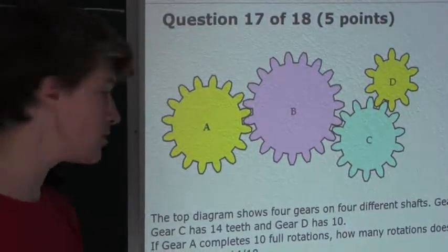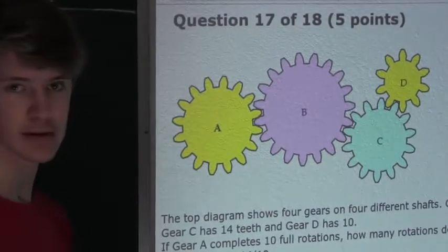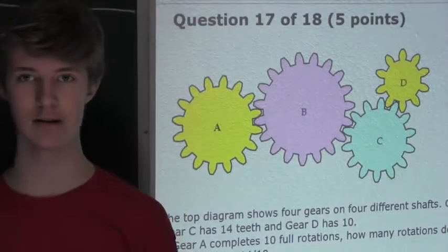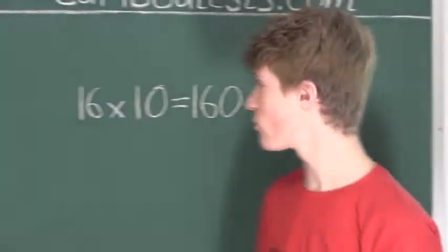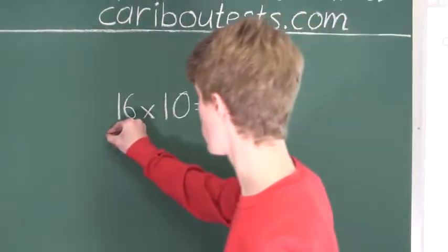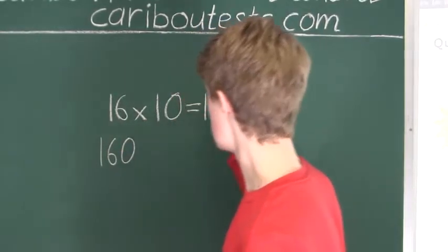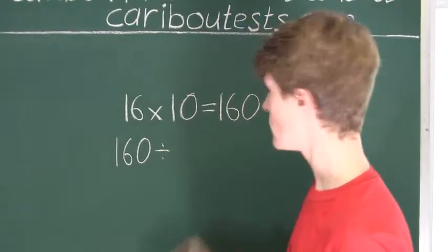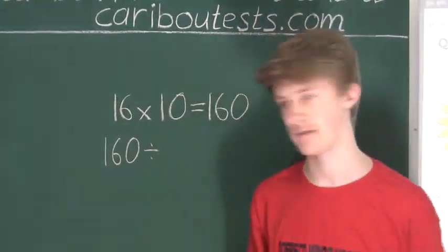And what we want to find out is how many rotations does gear D complete. So we know that gear D has 160 teeth that pass this point. Now to find out the number of full rotations, we take the 160 and divide this by the number of teeth that gear D has. And from the question, we know that it has 10.